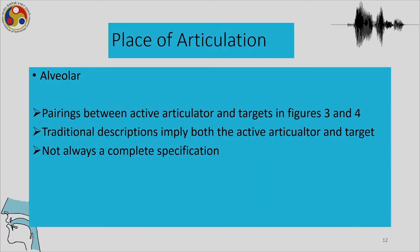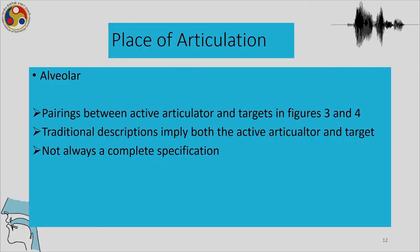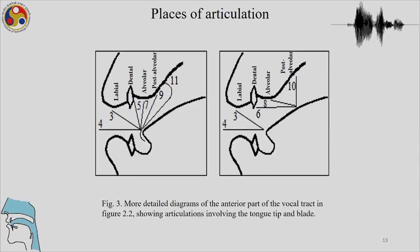Moving on to place of articulation — what is called alveolar — we have pairings between the active articulator and targets. The traditional descriptions imply both active articulator and target, but they are sometimes not sufficient. For instance, when we say a sound is labiodental, the traditional description does not specify which part is the movable articulator and which is not.